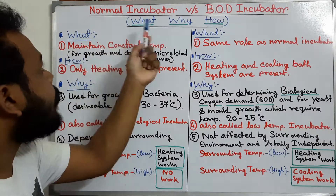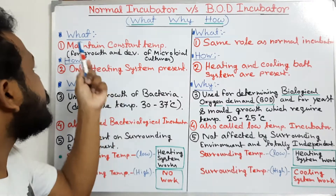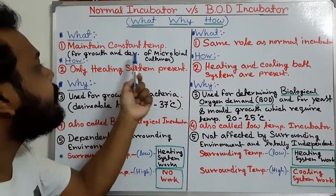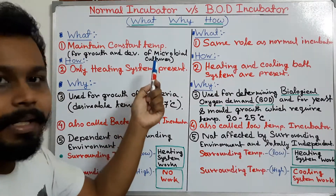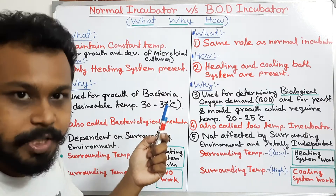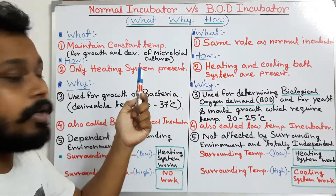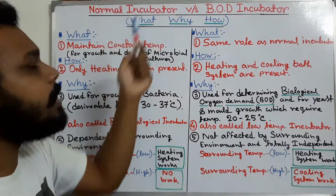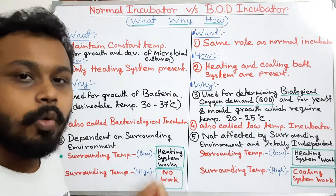A normal incubator is equipment which maintains a constant temperature for the growth and development of microbial cultures. For a particular bacterial growth, we need a particular temperature for incubation — a particular incubation time and incubation temperature — and we need this normal incubator to maintain that constant temperature for the growth of microorganisms.